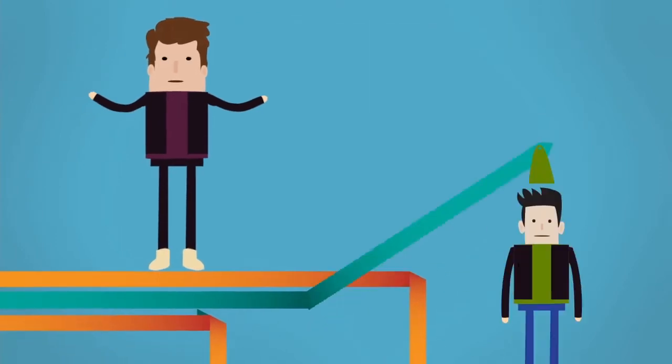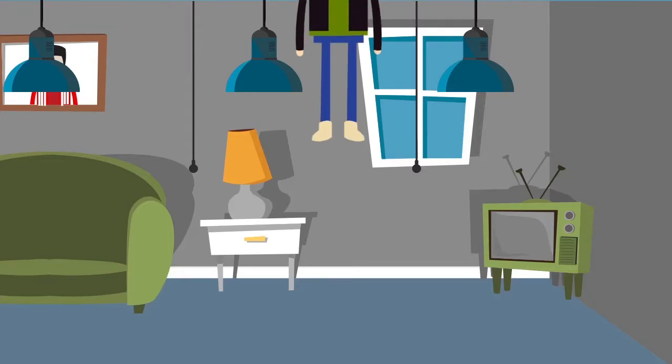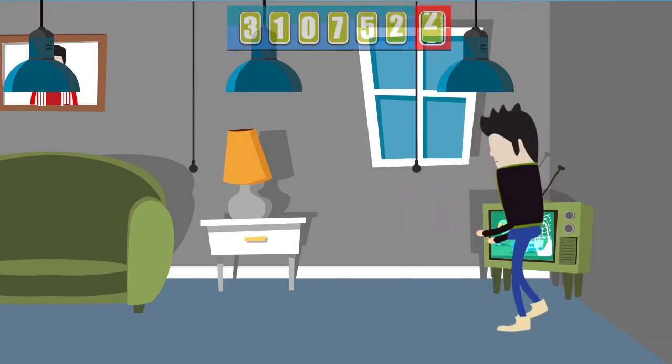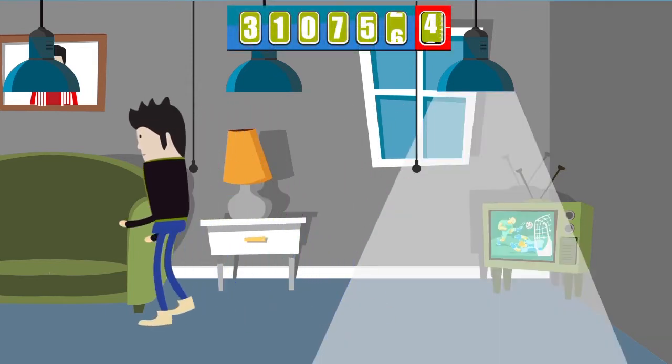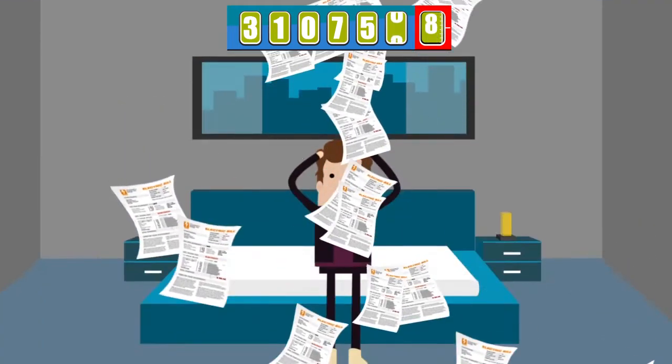But John has a problem and that problem's name is Liam. Liam isn't very energy conscious and runs high electricity bills every month, which John has to pay for. Poor John.